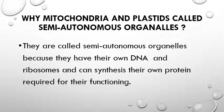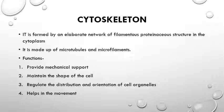This is a very important question. Plastids and mitochondria are both double membrane organelles playing a very important role in animal and plant cells. Mitochondria are present in both animal and plant cells, but plastids are present only in plant cells.